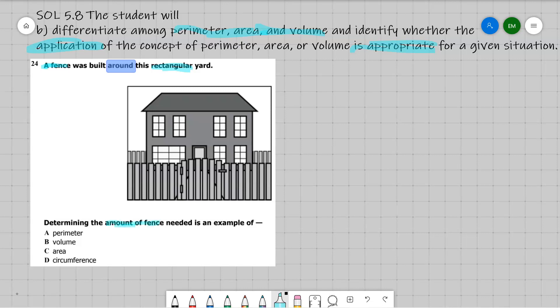So, determining the amount of fence needed is an example of... am I filling anything? No, I'm not filling anything. So I'm not filling like a bathtub or a swimming pool. So that means it's not volume.